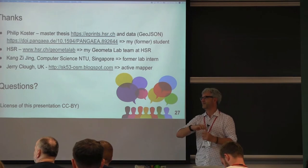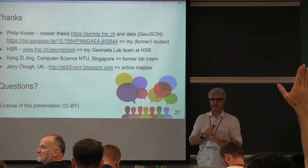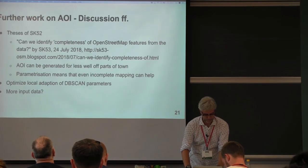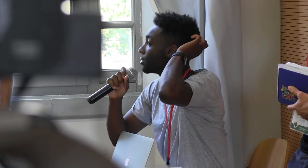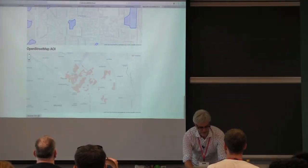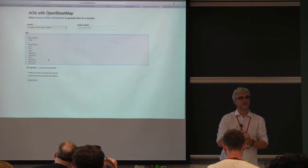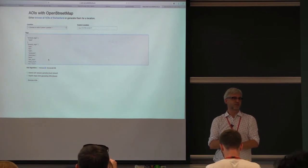A little more time for questions. First question: do you have a compiled list of tags you used to determine whether something qualifies as an AOI? Of course — that's part of this web page. If I start the calculation, you'll see the complete list of tags. And in the implementation, in the GitHub repository when it's open source, you'll see it in the source code.